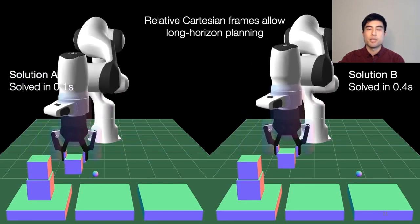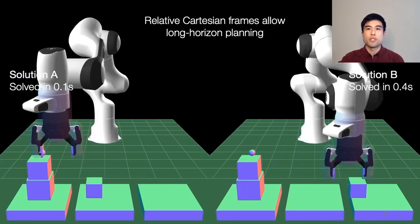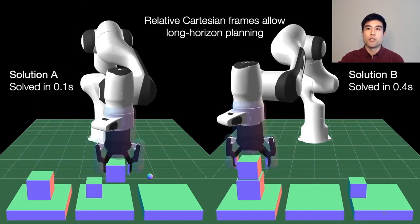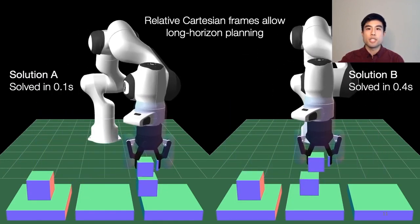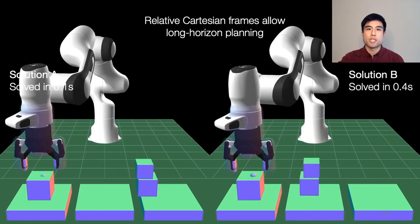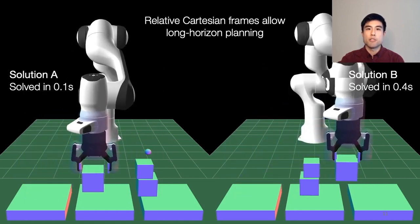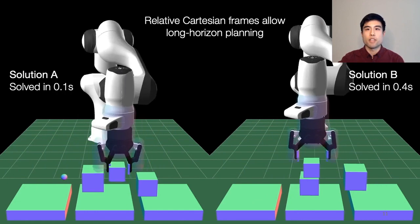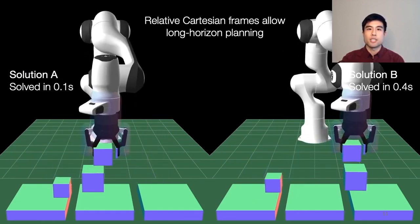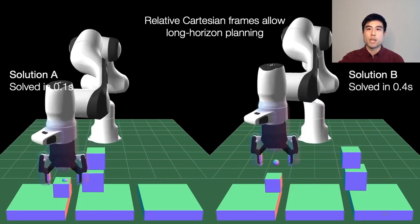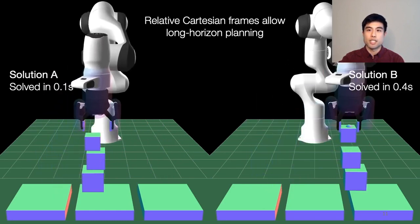This Towers of Hanoi demo shows how relative pose variables allow us to plan over really long horizons through the decoupling of time steps. Without decoupling, this would be a difficult optimization problem, because the placement of a block early in the plan will affect the rest of the plan. Each of these videos is a candidate solution to the problem, with each optimization solved in less than half a second.